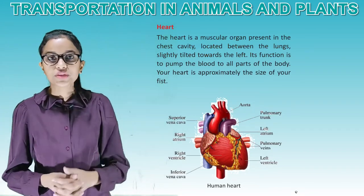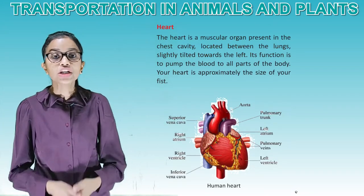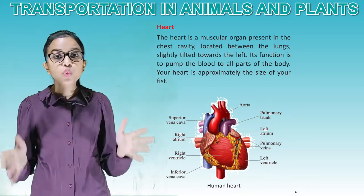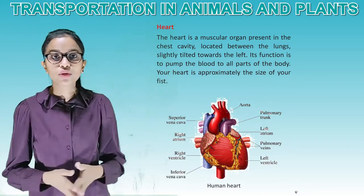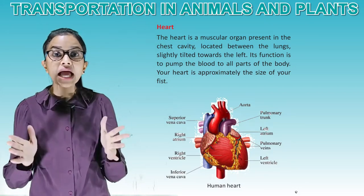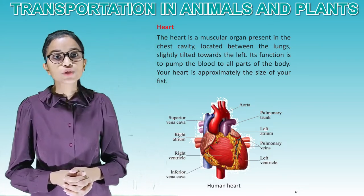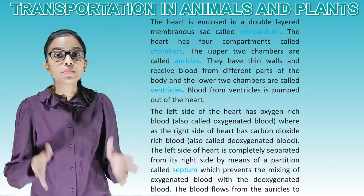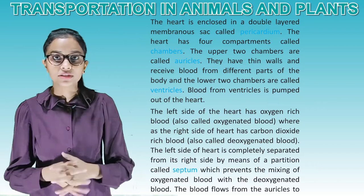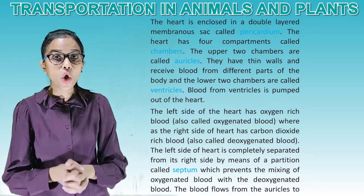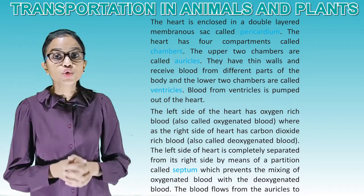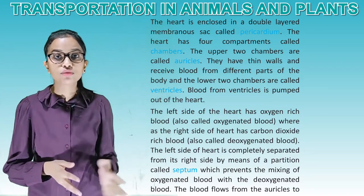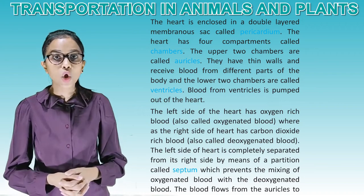The heart is a muscular organ present in the chest cavity, located between the lungs, slightly tilted towards the left. Its function is to pump the blood to all parts of the body. Your heart is approximately the size of your fist. The heart is enclosed in a double-layered membranous sac called pericardium. The heart has four compartments called chambers. The upper two chambers are called auricles; they have thin walls and receive blood from different parts of the body. The lower two chambers are called ventricles.